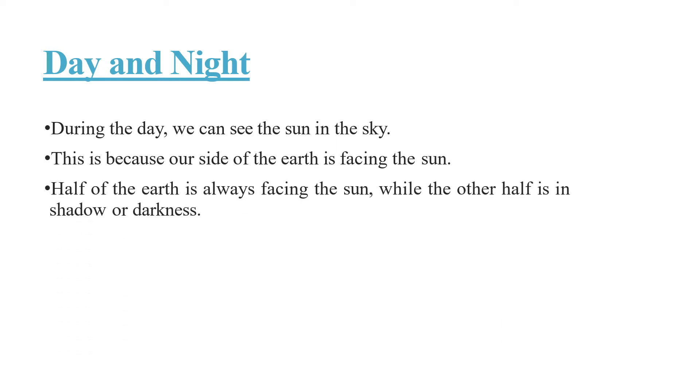Let us talk about day and night. During the day, we can see the Sun in the sky. This is because our side of the Earth is facing the Sun. Half of the Earth is facing the Sun while the other half is in shadow or darkness. This is because the Earth is always rotating on its axis.